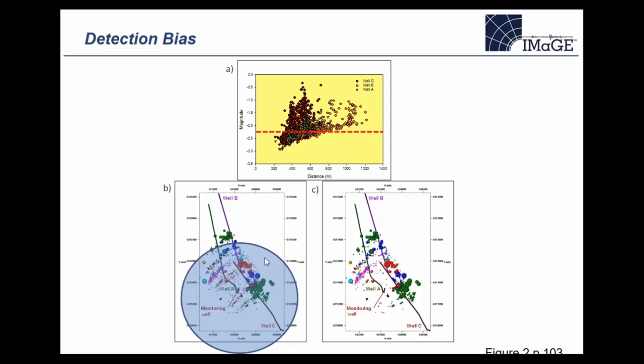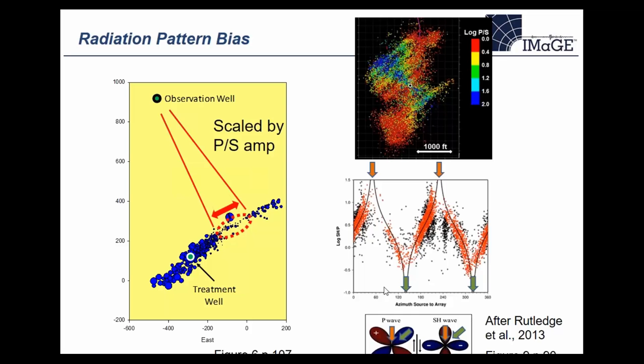This is important because if you look at a particular microseismic image, you can see a lack of microseismic northeast of the wellbores. A good question to ask before interpreting is whether that's just a sensitivity bias — simply too far from the geophones to be detected. Looking at the detection range, this particular image would be expected if the monitoring well is anywhere within that circle. This bias is often well known and treated in most interpretations; the next ones are maybe not so well treated.